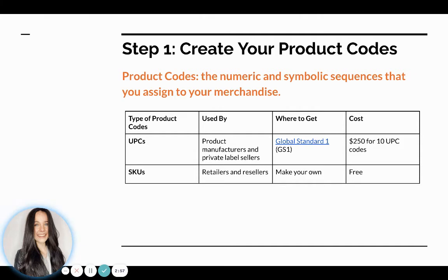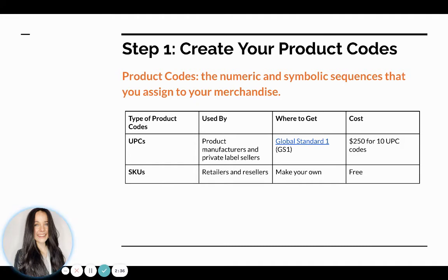Then there are SKUs, or stock keeping units. These are numeric sequences that you create yourself — they're custom. They can be random, or you can customize them to the products you have. For example, in a department store, everything in the women's section could start with one, men's section two, kids' section three, and so on. You can make it make sense for your inventory. Creating your own product codes is free — you just put them into your computer and go from there.